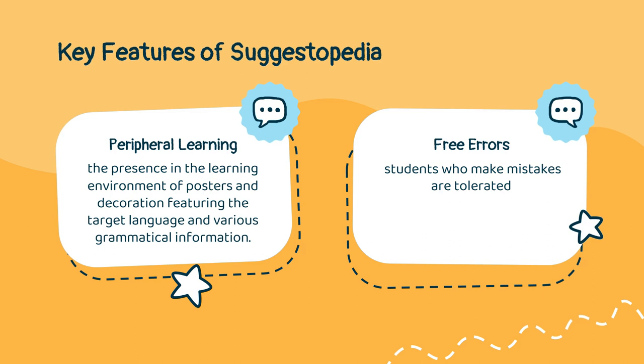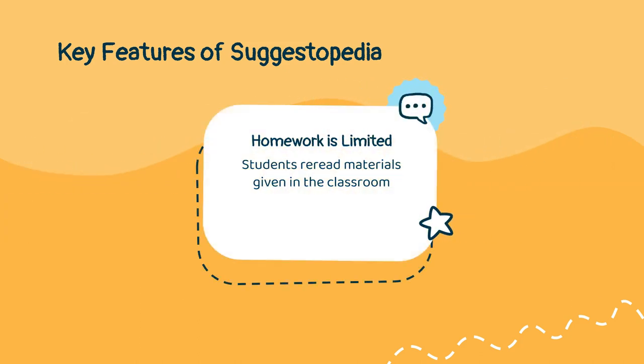Next is free errors. In the teaching-learning process, students who make mistakes are tolerated, for example, in pronouncing a word. The emphasis is on the content, not the structure. Grammar and vocabulary are presented and given treatment from the teachers, but not dwelt on. Lastly, homework is limited. Students read materials given in the classroom once before they go to sleep at night, and once in the morning before they get up.